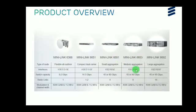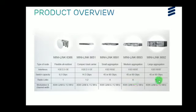The 66691, 66693, and 66692 all have the same interfaces and switch capacity. The 66693 supports a maximum of 8 radio links, whereas the 66692 supports a maximum of 16 radio links. The remaining modulation and bandwidth schemes are the same across the 6600 series.